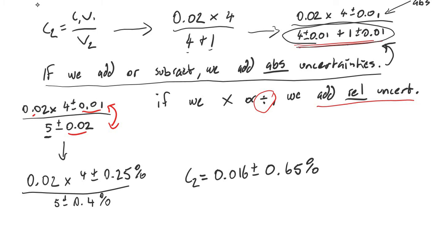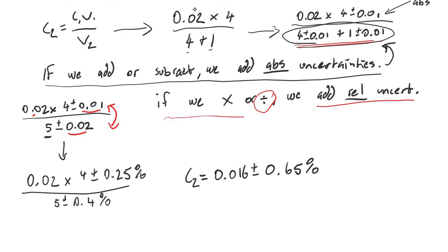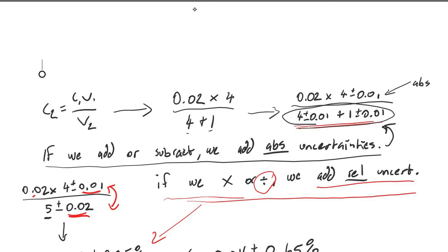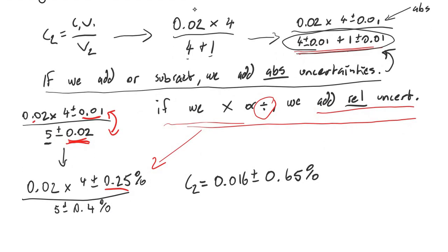There's another sample calculation you can do. The idea is: if we multiply or divide, we add relative uncertainty. An example of that is what you've just done here — you've turned these absolute uncertainties, the 0.01 and 0.02, into relative uncertainties. So we can apply this rule: if we multiply or divide, we add relative uncertainties. That's a sample calculation.